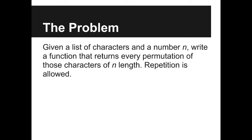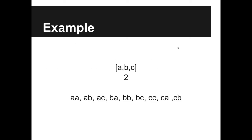This can make a little more sense with an example. Suppose I was given the list of characters a, b, and c — not a list of variables, but the actual characters a, b, and c — and I was also given the number 2. The idea would be I would need to write a function that would return aa, ab, ac, ba, bb, and so on. These are all of the two-character permutations of the list where repetition is allowed.